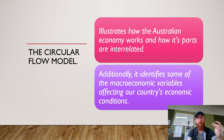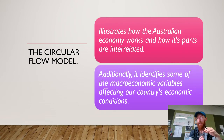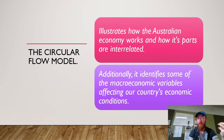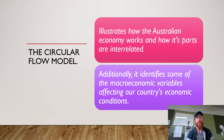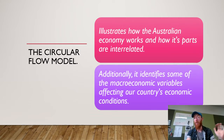The circular flow model illustrates how the Australian economy works and how its parts are interrelated. Additionally, it identifies some of the macroeconomic variables affecting our country's economic conditions, showing us how, when some of these factors change, they will impact on the economy and flow on to affect other parts of it. We're going to draw it out step by step, because that will help it make a lot more sense than just looking straight at the model.